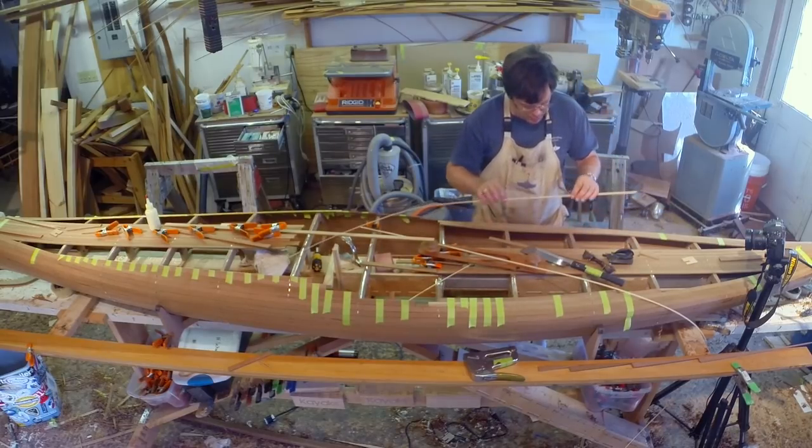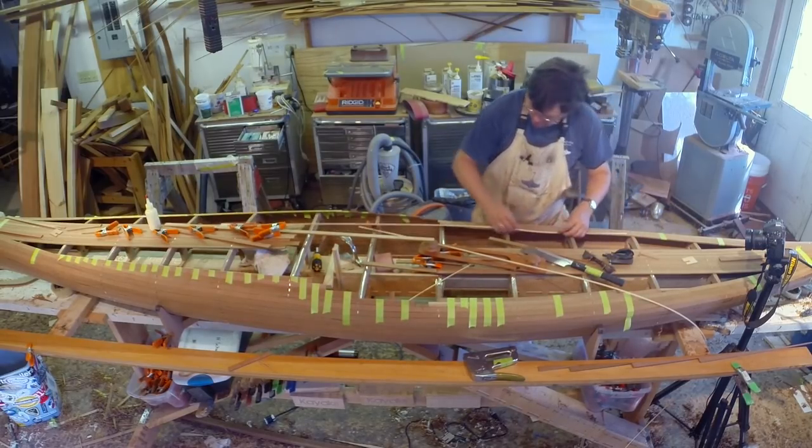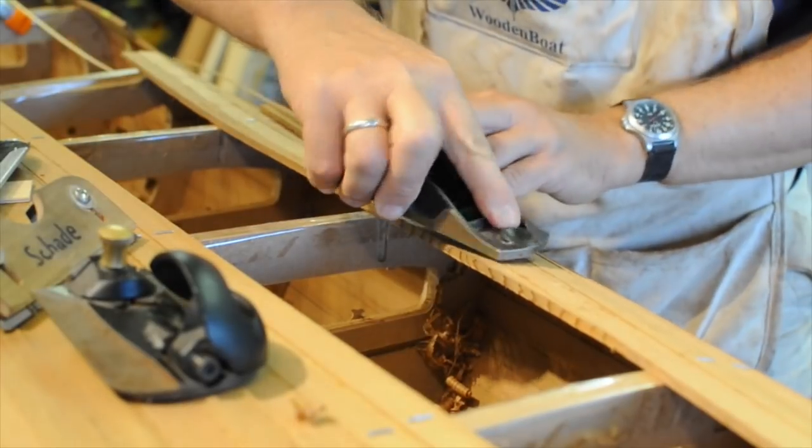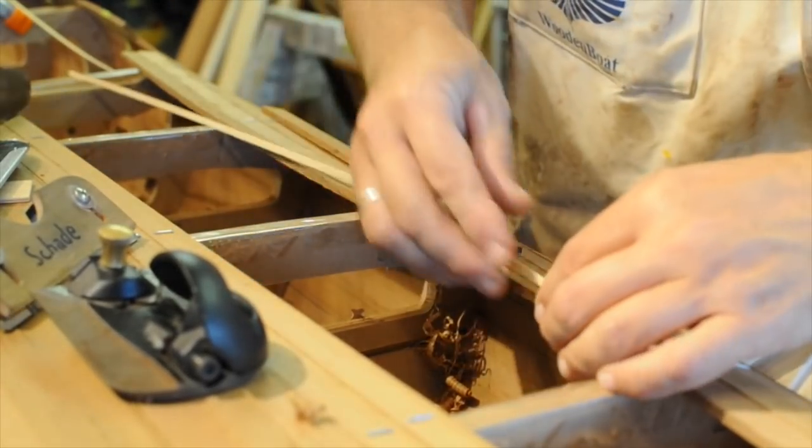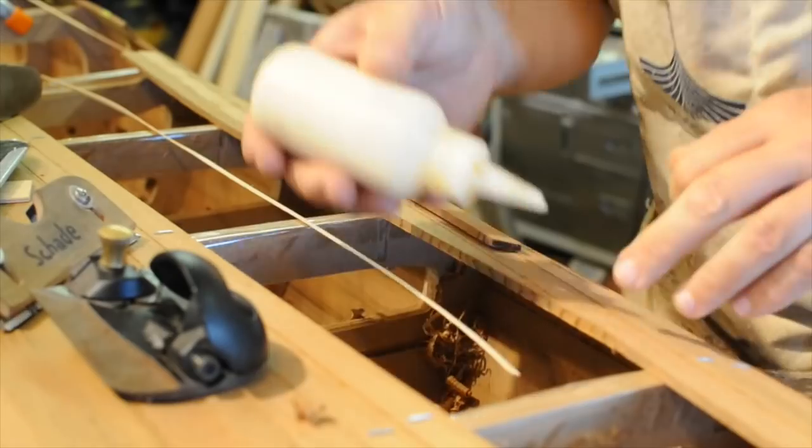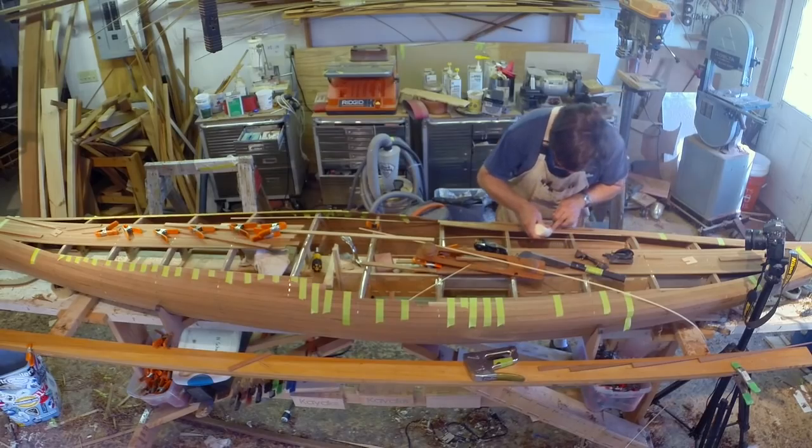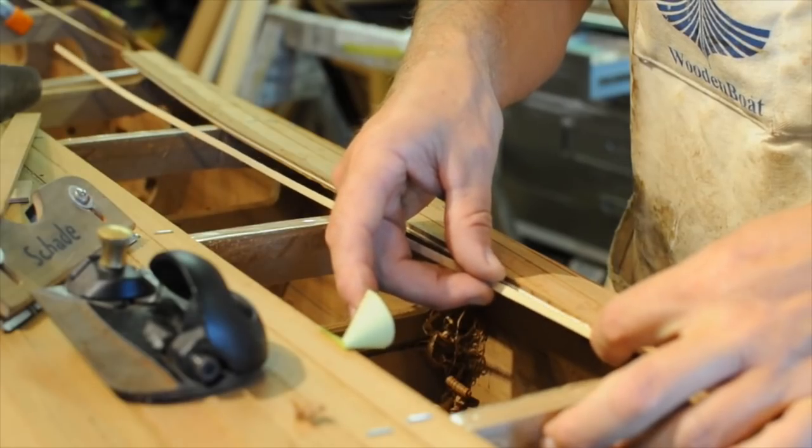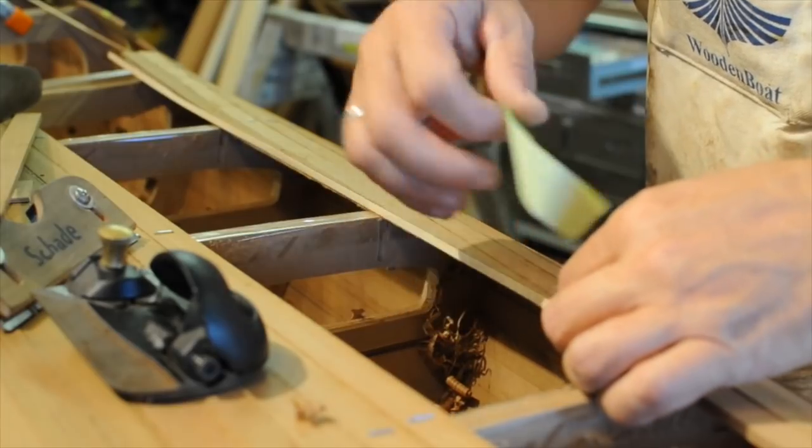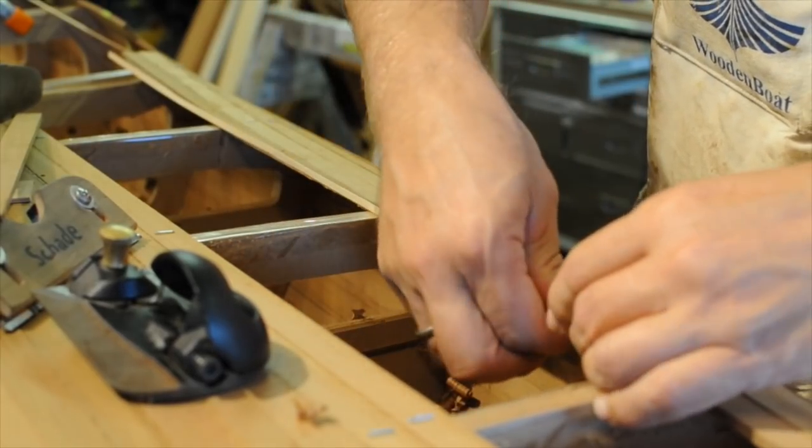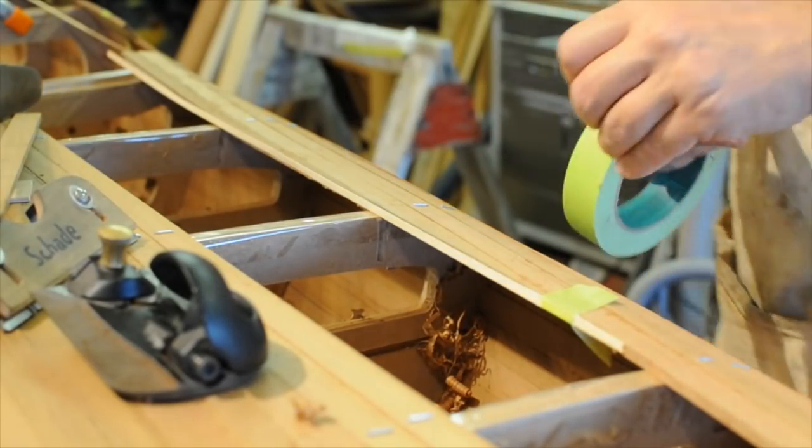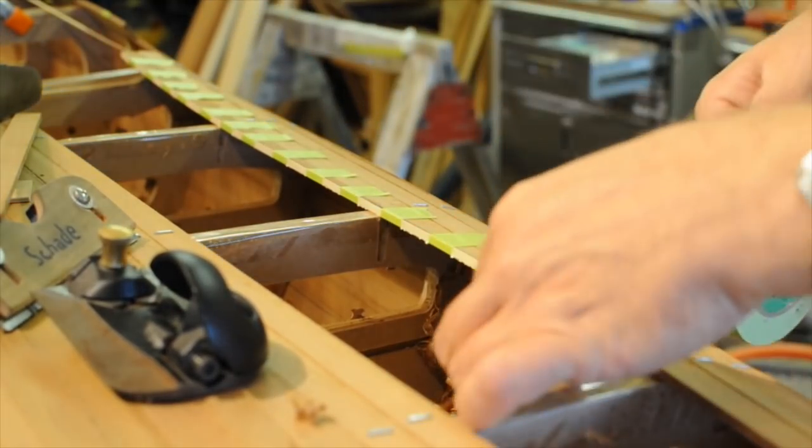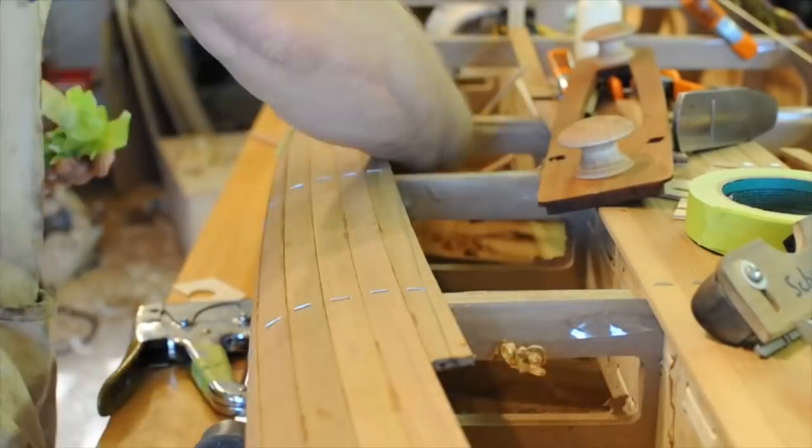A very thin strip of Alaskan Yellow Cedar will make a nice accent along the feature line. There is a tiny little bevel at the end where the feature line intersects the next strip. Obviously staples are not an option on such a thin piece of wood. The masking tape will serve as a clamp while the glue sets up. The same drill on the other side and then up front.